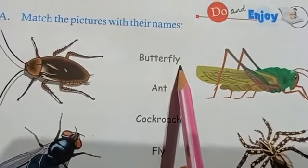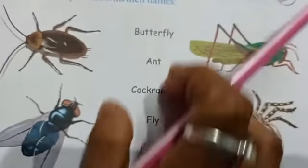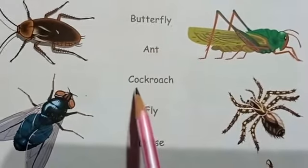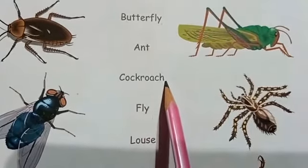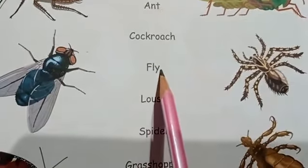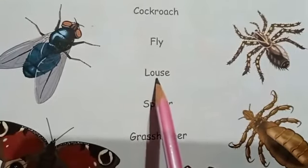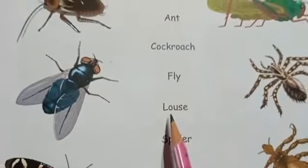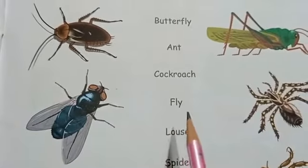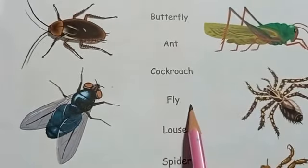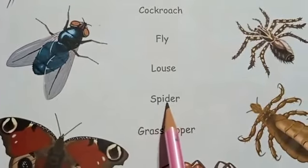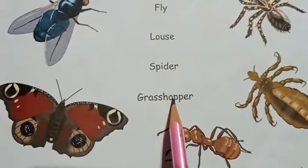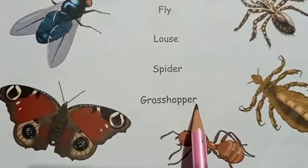I will read the names first. Butterfly — B-U-T-T-E-R-F-L-Y. Next, ant. Next, cockroach — C-O-C-K-R-O-A-C-H. Next, fly — F-L-Y. Next, spider — S-P-I-D-E-R. Next, grasshopper — G-R-A-S-S-H-O-P-P-E-R.